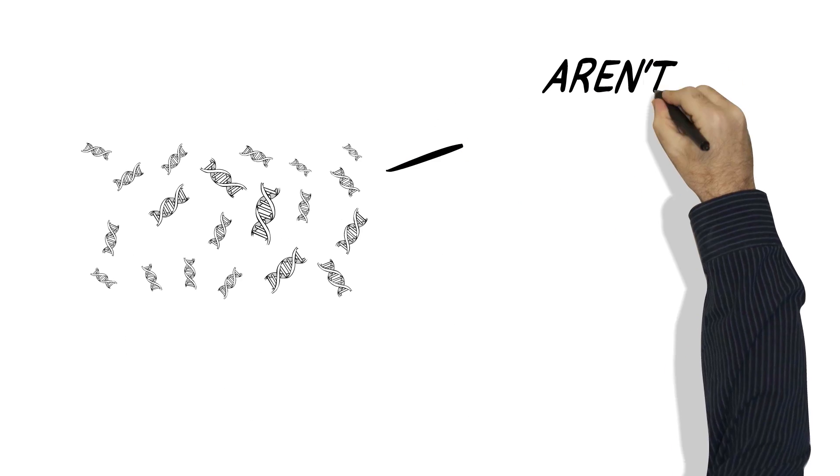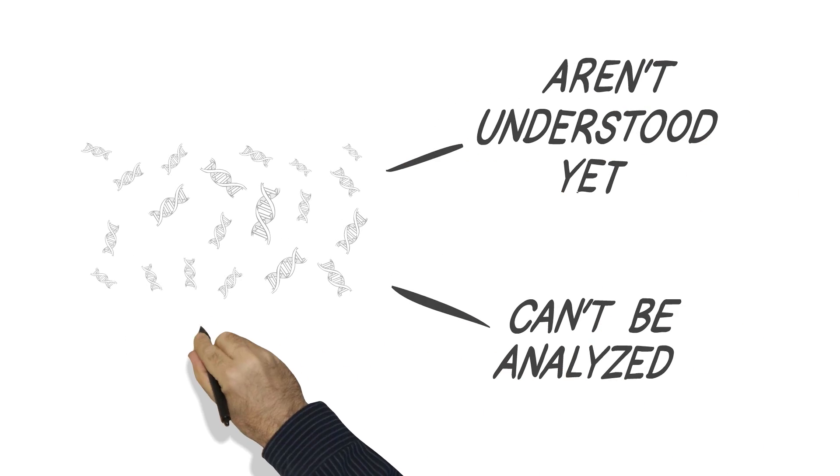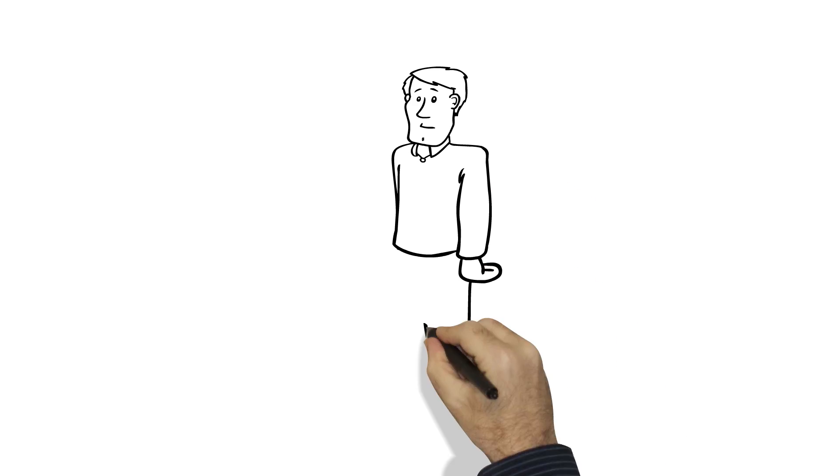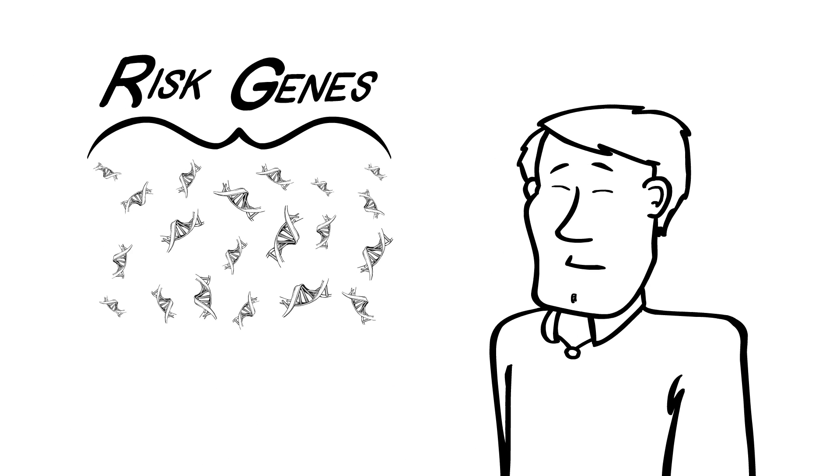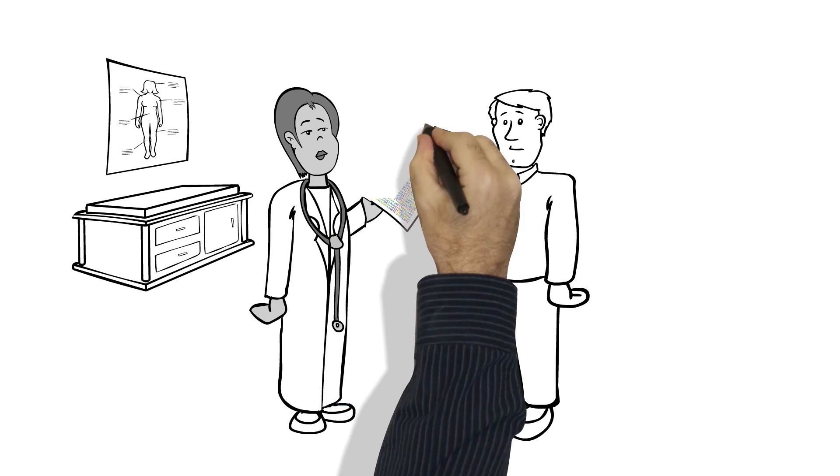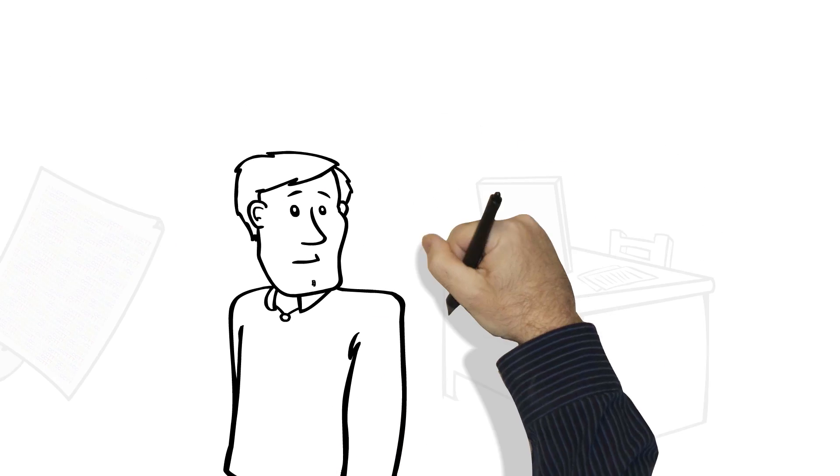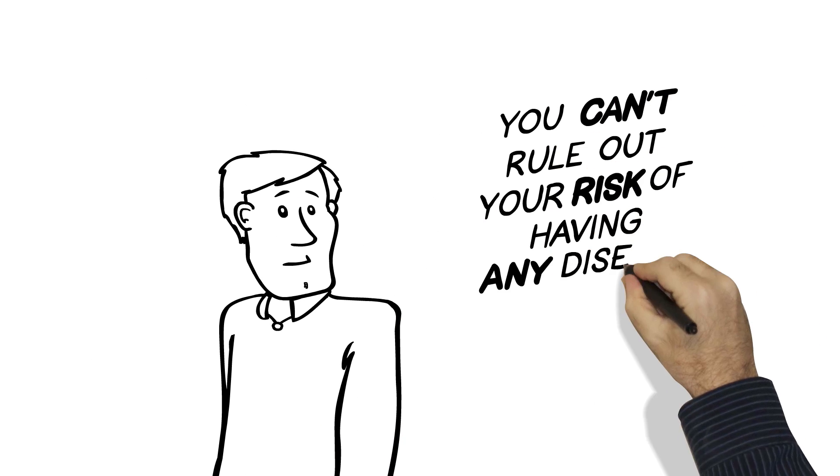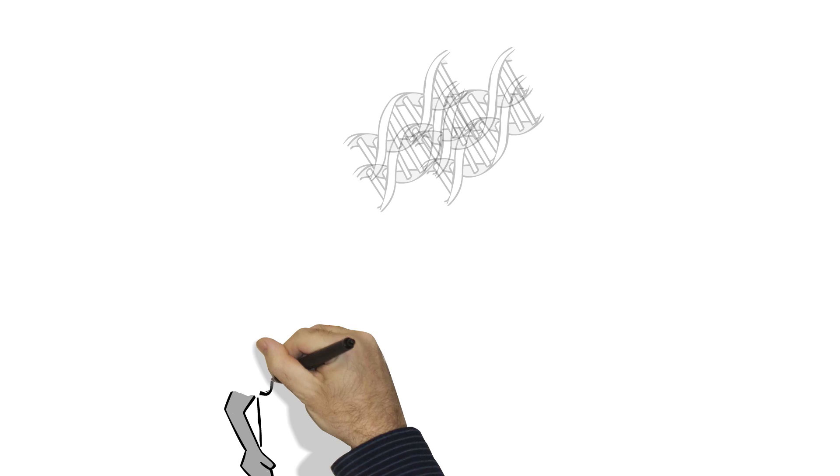Another thing to remember is that there are lots of genes that aren't understood yet or can't be analyzed. So it's important to remember that negative results doesn't necessarily mean that you don't have any risk genes. They simply might not have been detected in the analysis, so you can't rule out your risk of having any disease. We just don't know all the answers yet.